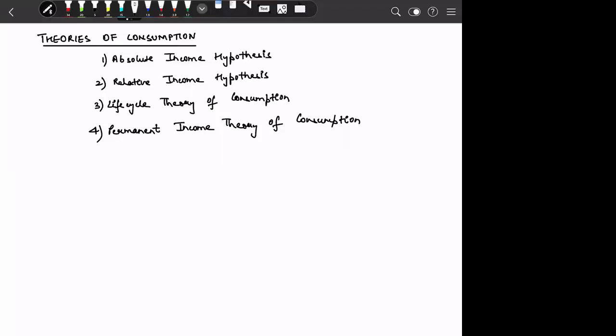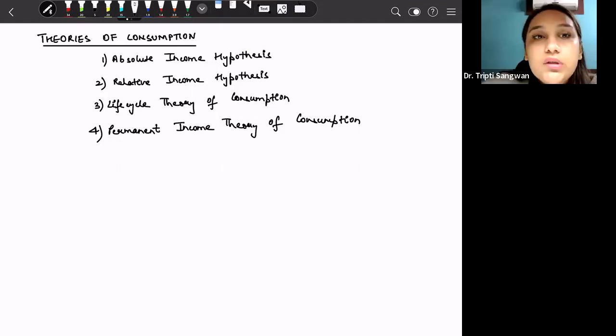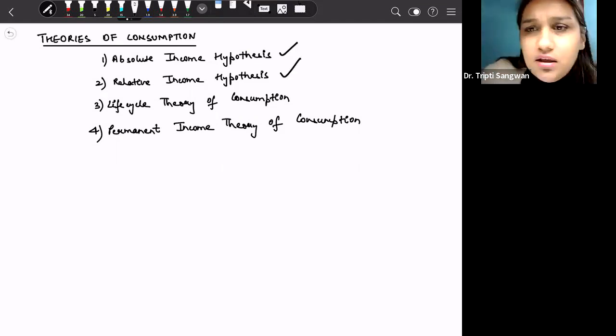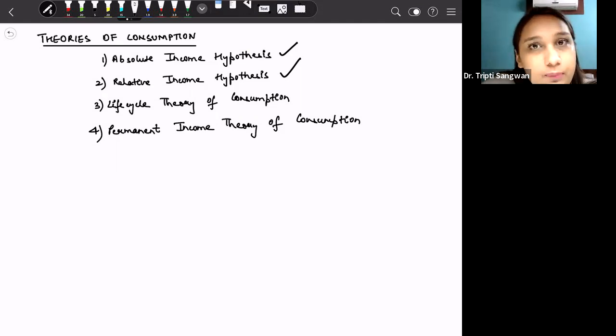Hello everyone, so we are continuing with the theories of consumption. Till now we have done two theories: absolute income hypothesis and relative income hypothesis. Absolute income hypothesis was put forward by Keynes who said that yes, there is a positive relationship between income and the consumption level.